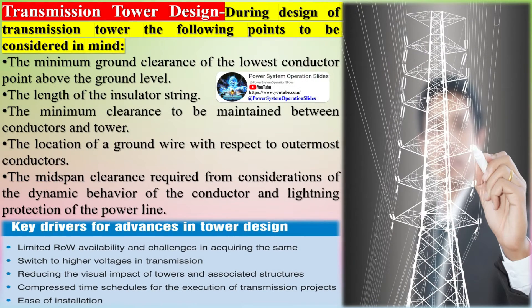During the design of a transmission tower, the following points must be considered: the minimum ground clearance of the lowest conductor above ground level; the length of the insulator string; the minimum clearance to be maintained between conductors and the tower; the location of the ground wire with respect to the outermost conductors; and the mid-span clearance required for dynamic conductor behavior and lightning protection.